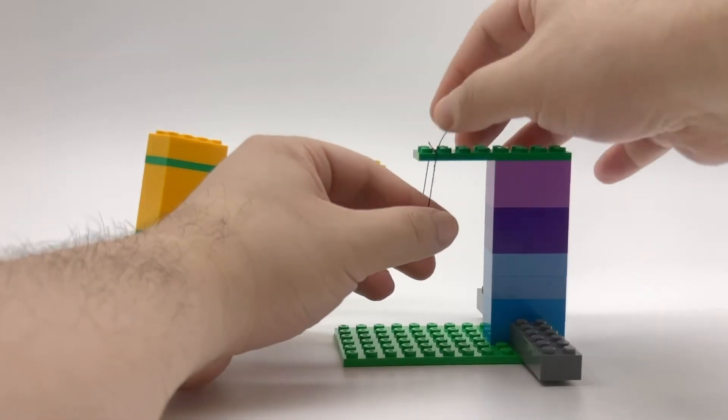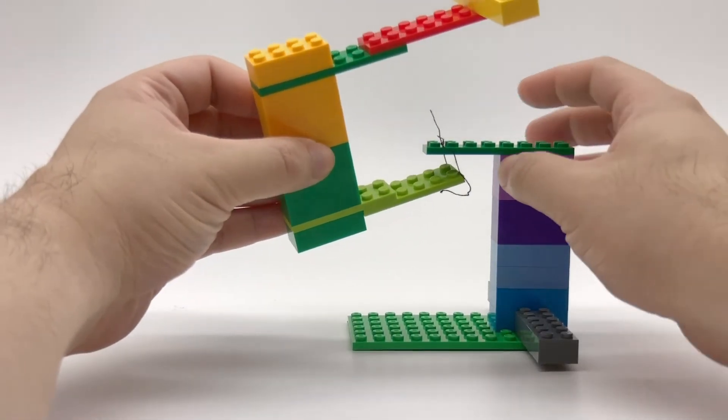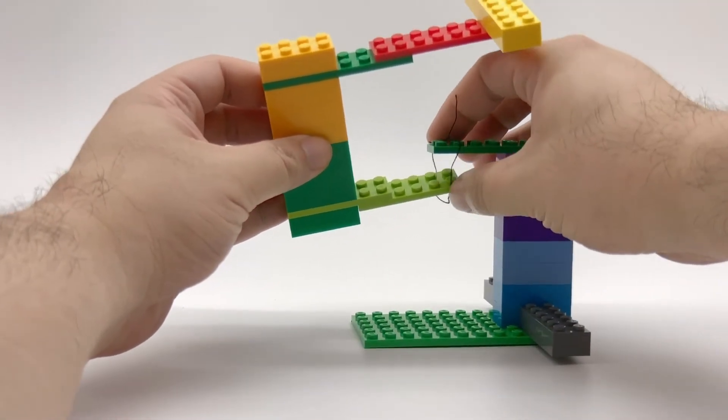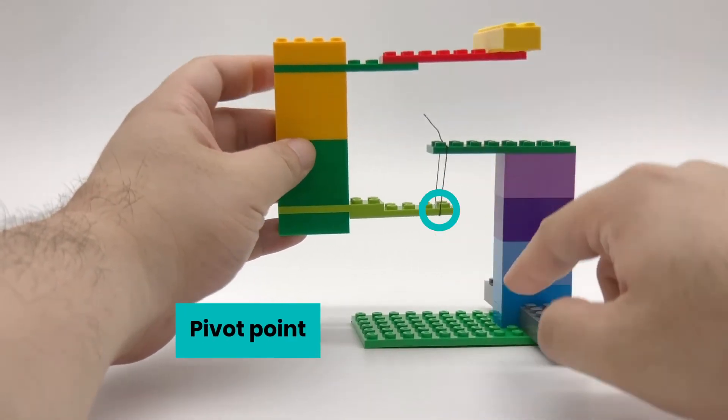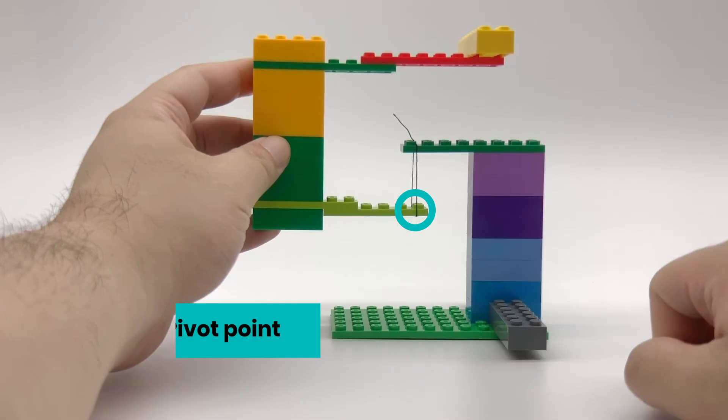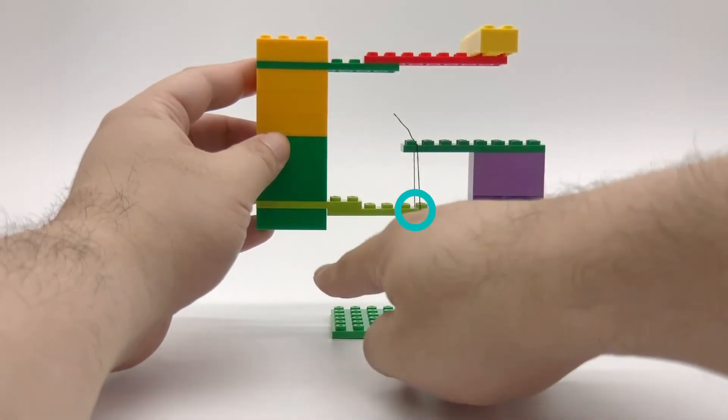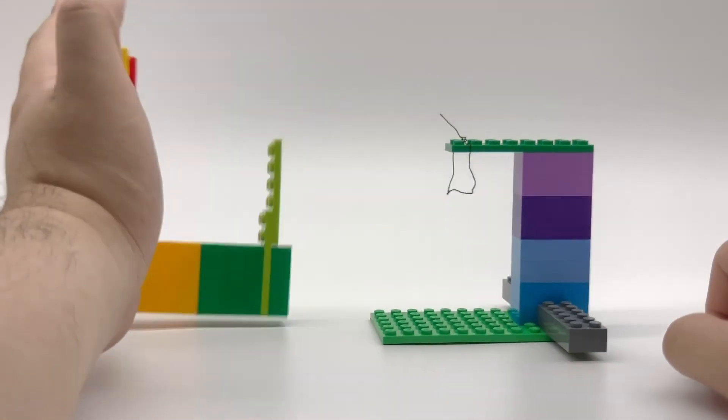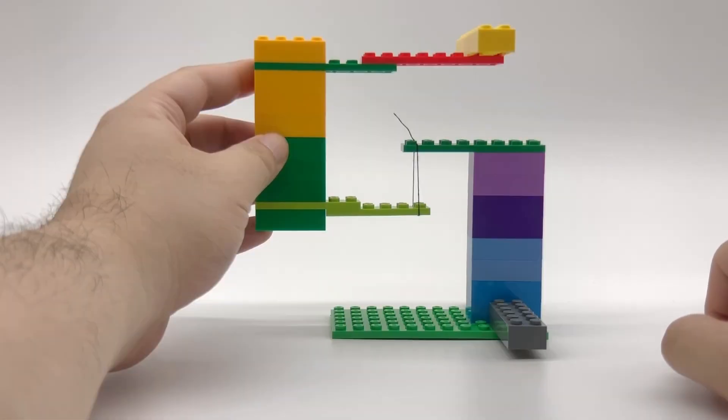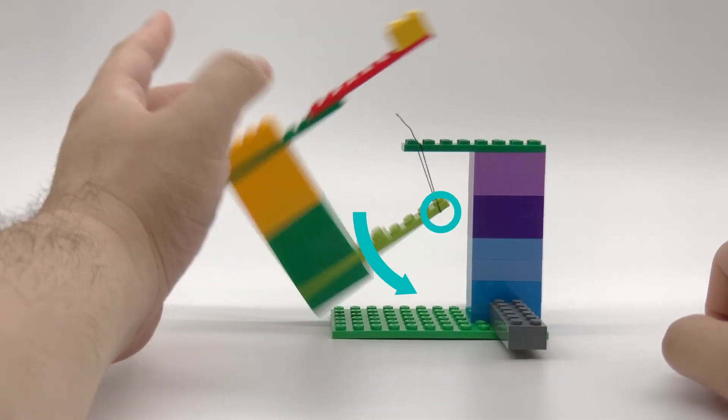Alright so I made this little loop out of some string earlier, and if I attach this part to this part, now we've created a pivot point. What do you think will happen if I were to let go right now? Since the center of gravity is here on this side of the pivot point, all the weight is going to be pushing down at this point. And because we are attached here, the structure falls in this direction.